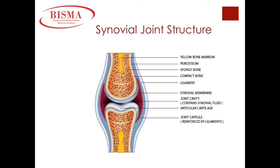Here we have the structure of a synovial or freely movable joint. Take a moment and identify the bones. On each bone end you have articular cartilage. Within the inner lining of the joint capsule, you have a synovial membrane. When we begin exercising, the synovial membrane releases synovial fluid within the joint cavity, which allows for lubrication of our joints and prevents us from injuring ourselves during exercise.